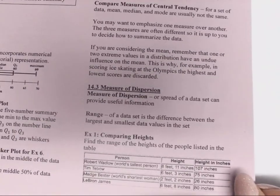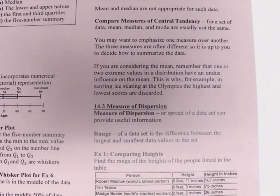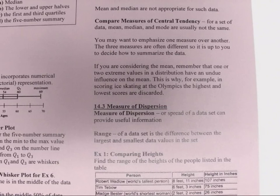Comparing the measures of central tendency, for a set of data, mean, median, and mode are usually not the same. You may want to emphasize one measure over another. The three measures are often different, so it is up to you to decide how you want to summarize the data. If you're considering the mean, remember that one or two extreme values in a distribution have an undue influence on the mean. That is where we talked about the outliers. This is why, for example, in scoring ice skating at the Olympics, the highest and lowest scores are discarded, so they don't have outliers changing what's going on as far as your average score.